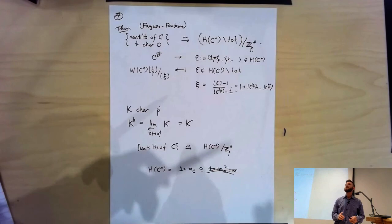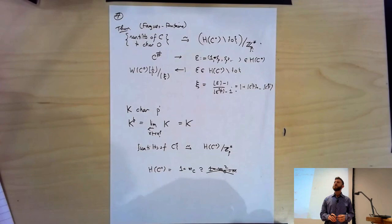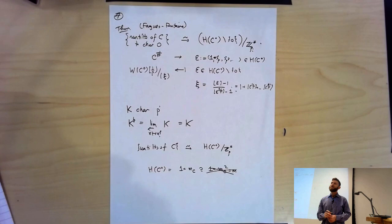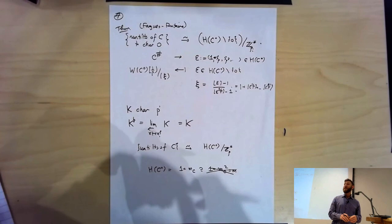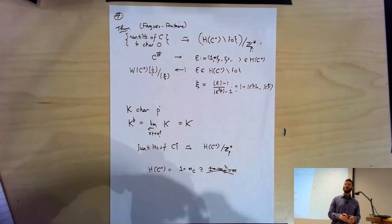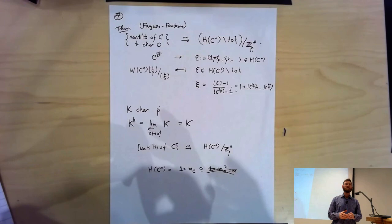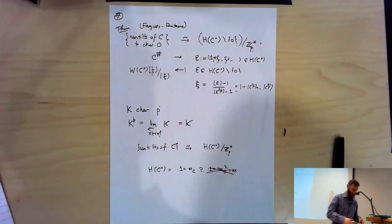Question: you mentioned there's a minimal perfectoid field of characteristic P contained in any other. In characteristic zero that's clearly not the case — neither of the two examples contains the other. Is it true that any minimal perfectoid field of characteristic zero tilts to the minimal field of characteristic P? What are the characteristic-zero fields which tilt to this minimal Laurent series field? I think that's one of the exercises in the projects, so maybe I shouldn't say too much. On that note, we need a break — resuming in five minutes.